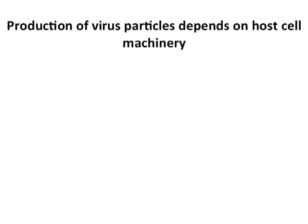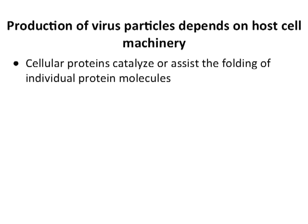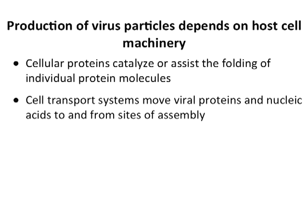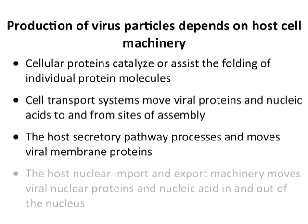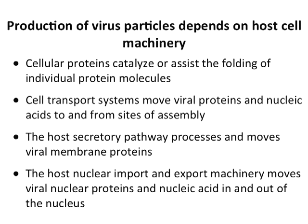Virus assembly also depends on the host cell. There are cell proteins that help fold viral proteins properly, and glycosylation plays a role. Transport systems move virion components around the cell to the sites of assembly — the same microtubules and transport pathways that brought viruses in also bring proteins to where they need to go. The secretory pathway moves membrane proteins from the ER to the plasma membrane, and the nuclear import and export machinery moves proteins in and out of the nucleus.